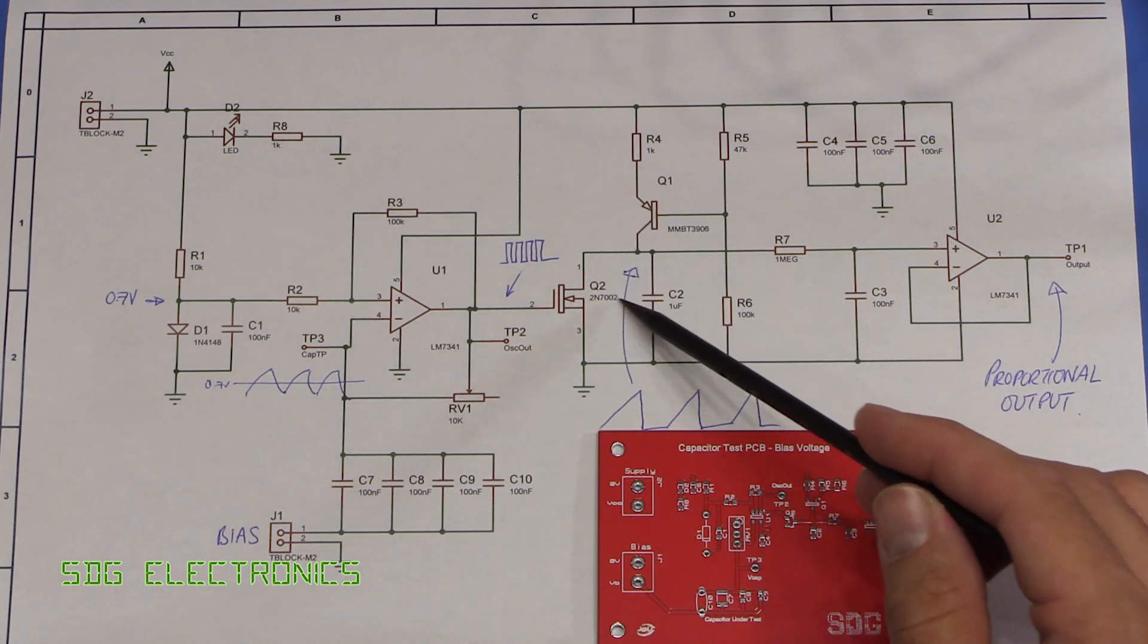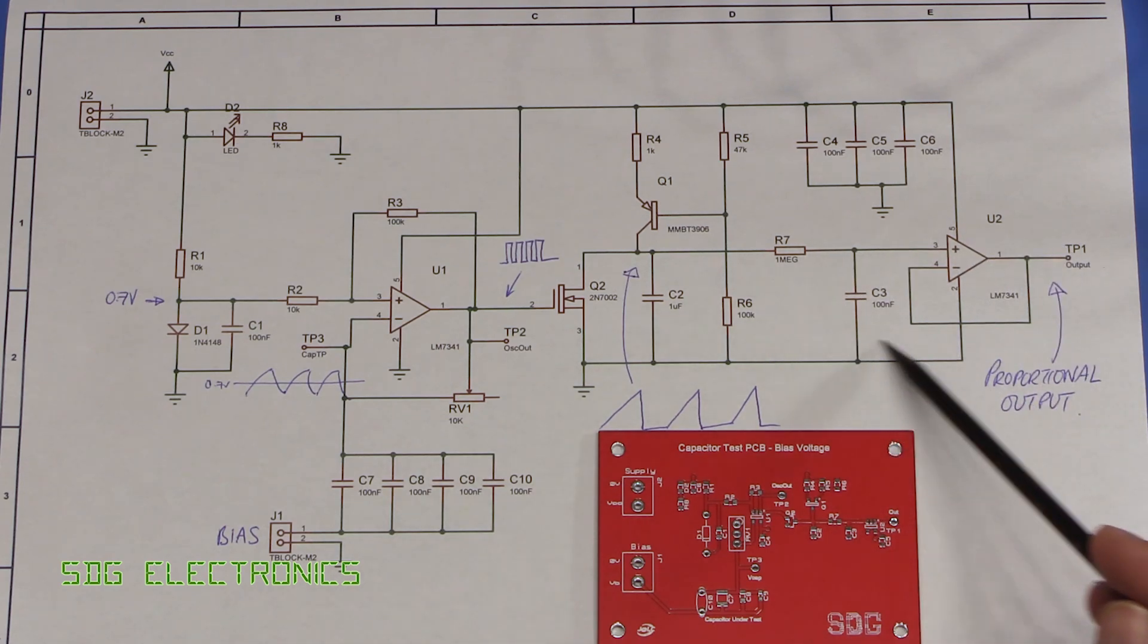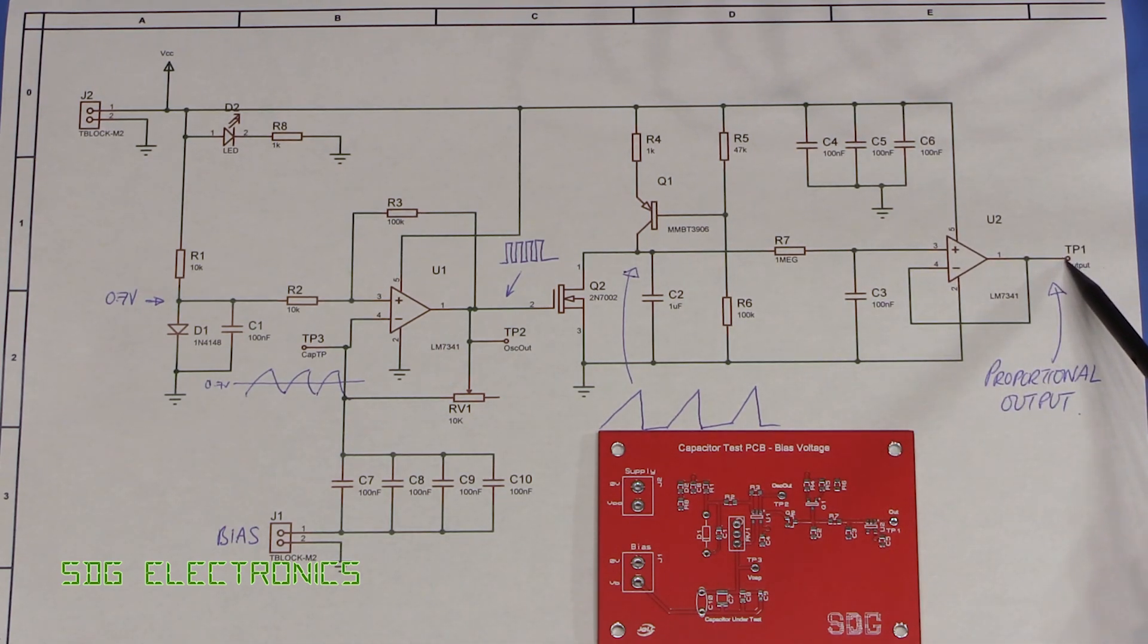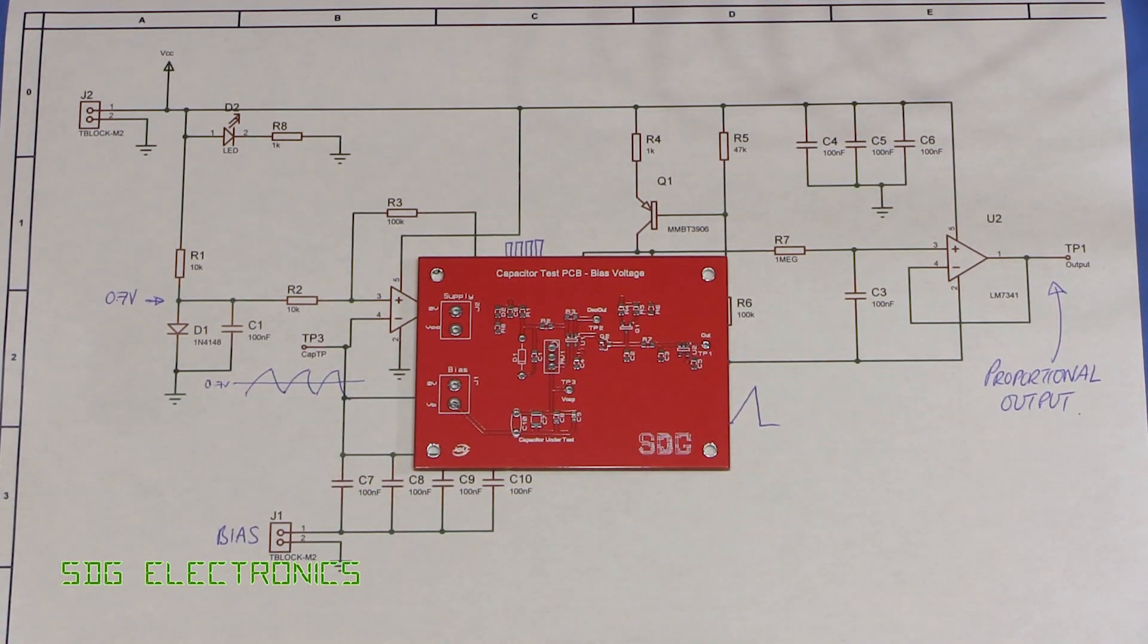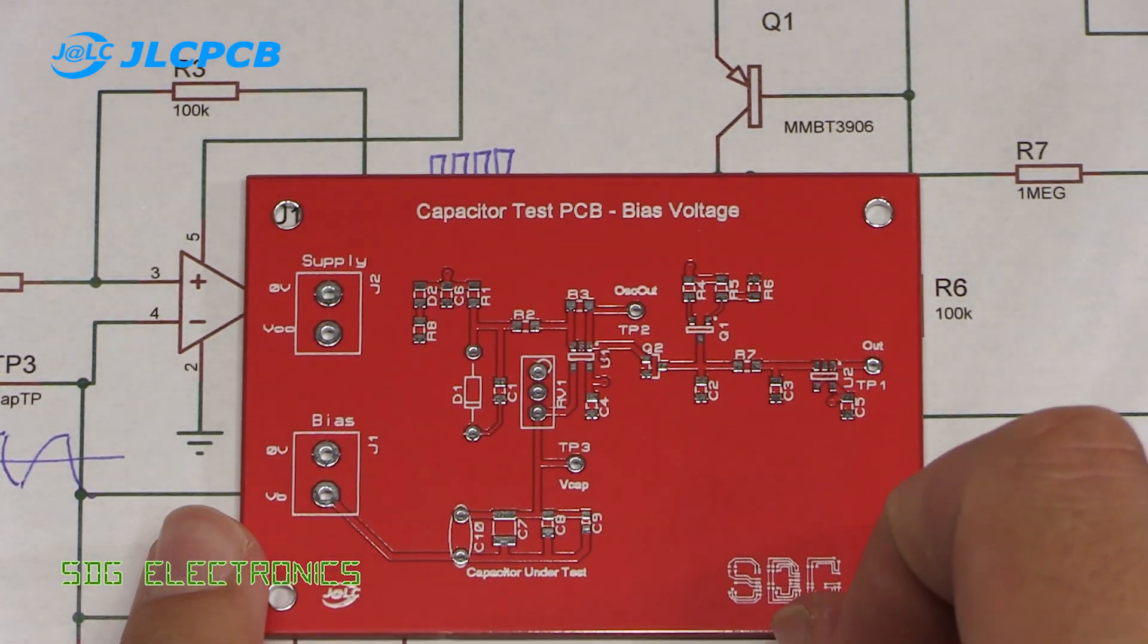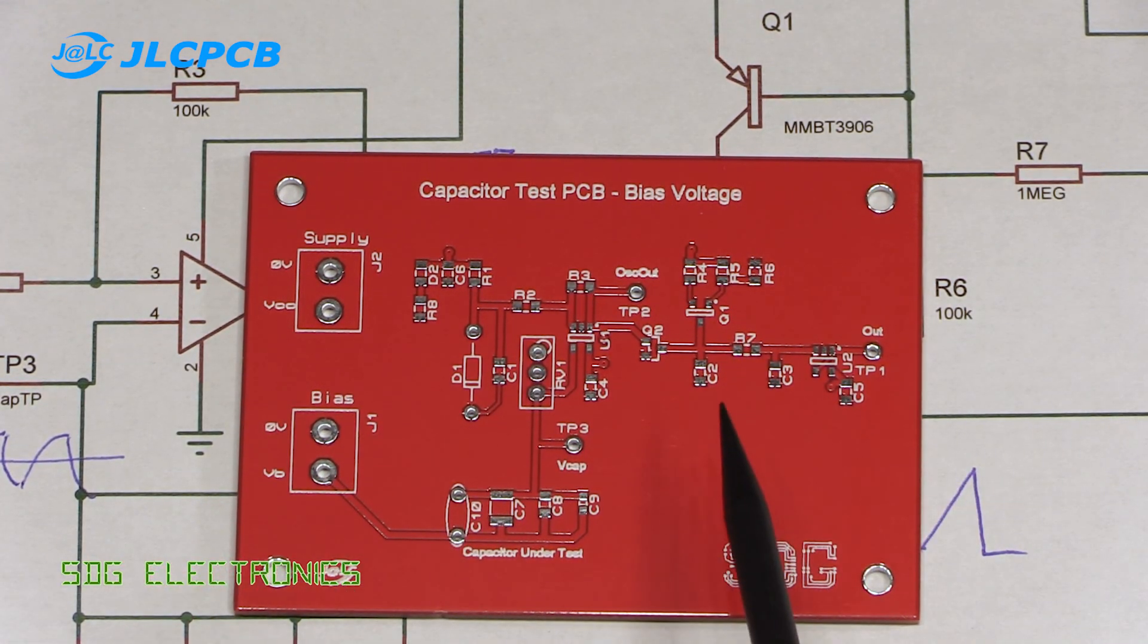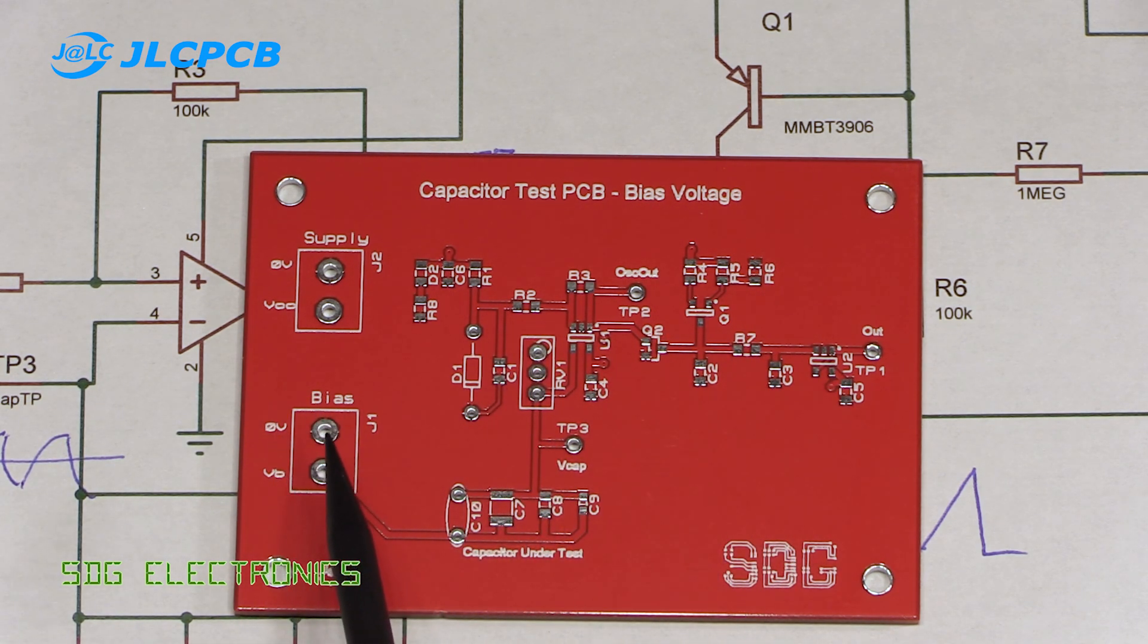Then we've got a little bit of circuitry here which gives us a sawtooth and then a filter here which gives us an output that's proportional to the oscillation frequency. And that's what I've implemented on this PCB.